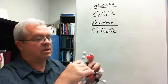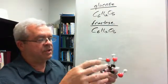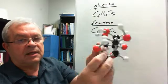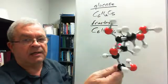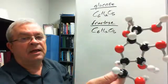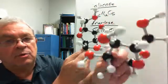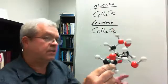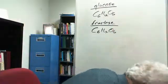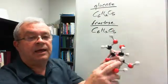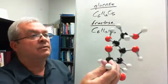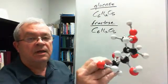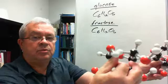Well, here is a ball and stick model of a fructose molecule. It's got exactly the same number and kinds of atoms that the glucose one did. In other words, 24 - 6 carbons, 12 hydrogens, 6 oxygens.